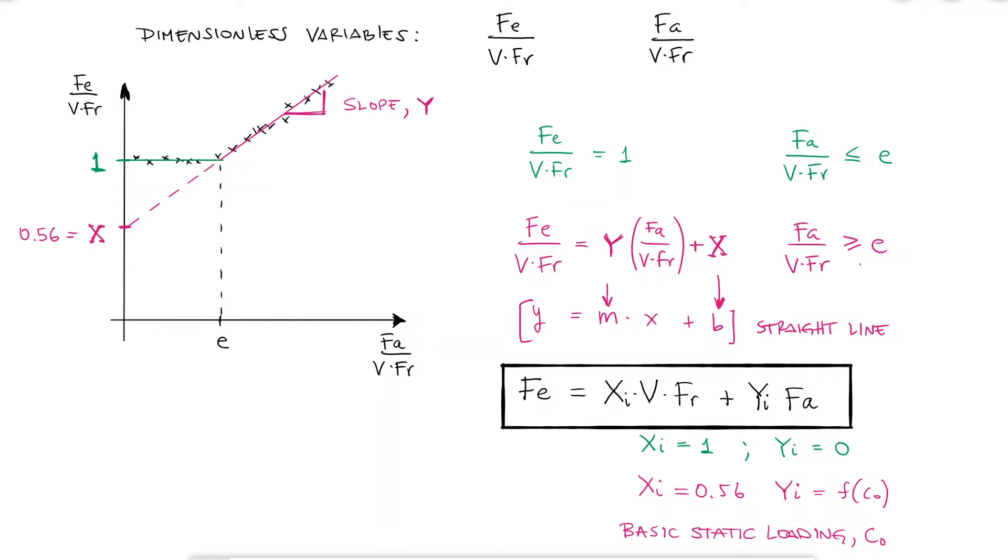Just to clarify, the X value of 0.56 here is just an example for ball bearings. Depending on the type of bearing, the X variable will change but its value will remain constant regardless of the value of C0. Only the slope would vary for calculating that equivalent force for X values greater than E.